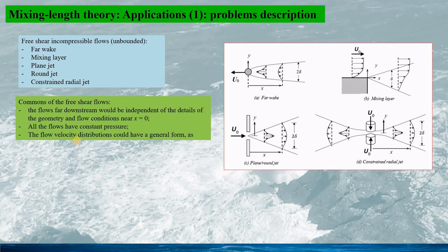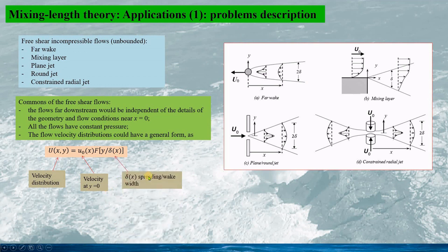The flow velocity distributions could have a general form expressed as this. Here capital U is the velocity distribution, and u_0 is the velocity at y equals to 0. This F_1 function is the function of the ratio of y divided by the width delta(x), the spreading or wake width.